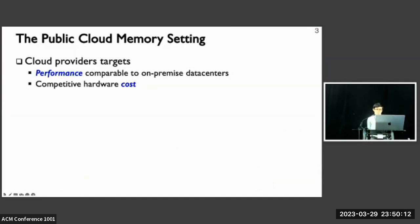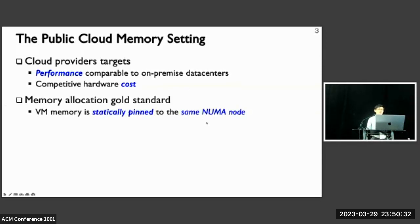Cloud data centers host mixed workloads running in virtual machines, and cloud providers need to guarantee good VM performance similar to on-premise data centers at competitive hardware costs. DRAM is a key driver for both performance and cost. The gold standard for VM memory allocation is that first, there is no NUMA spanning, meaning all cores and memory of a VM are from the same NUMA node. Second, memory is statically allocated and pinned to avoid memory management overhead at the cloud platform level. Additionally, DRAM is also very costly. In Azure, about 50% of the server cost comes from DRAM.